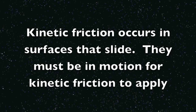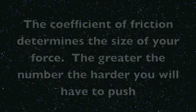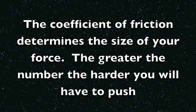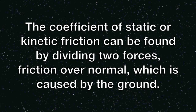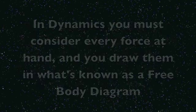Now we're well on our way to dynamics comprehension. Kinetic friction occurs in surfaces that slide — there must be motion for kinetic friction to apply. The coefficient of friction determines the size of your force. The greater the number, the harder you will have to push to get the object to move. But static is always more, because it's harder to start than to sustain motion. The coefficient of static or kinetic friction can be found by dividing friction force over normal force.